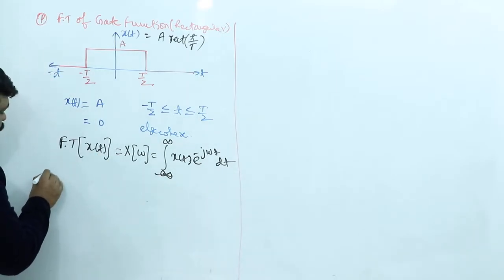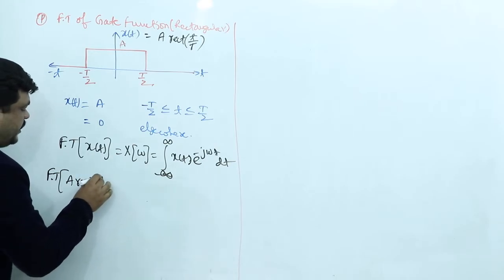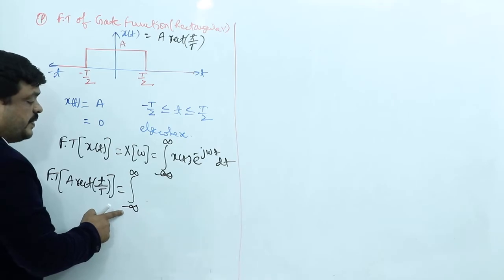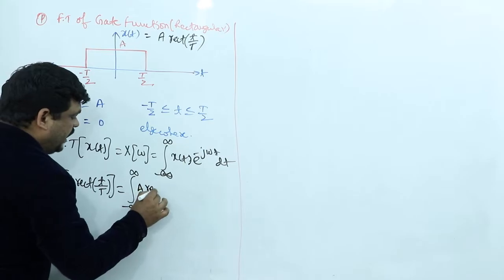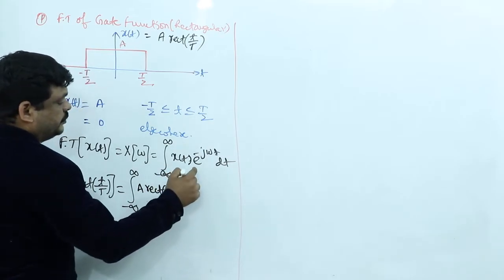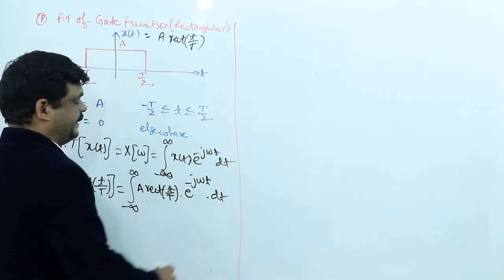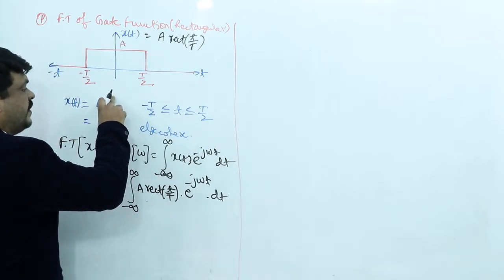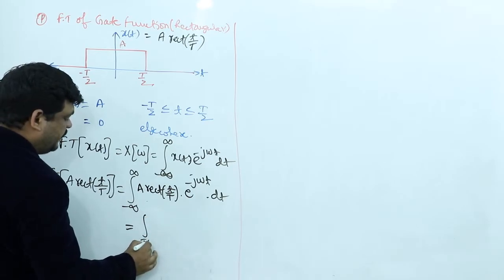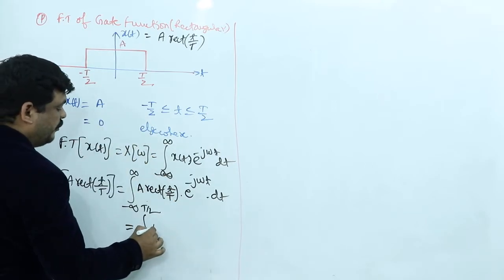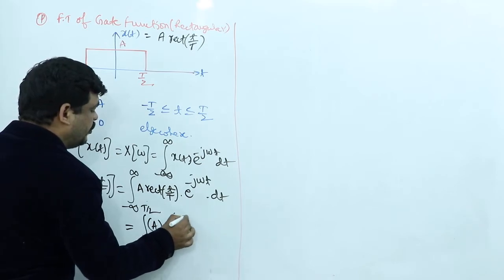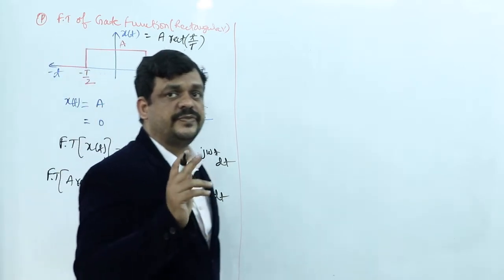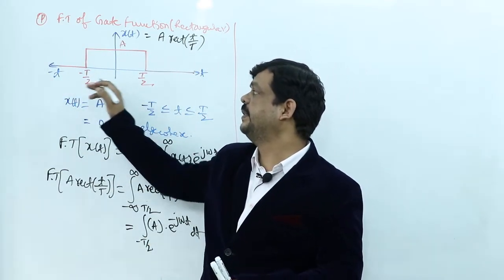So the Fourier transform of A · rect(t/T) is the integral from minus infinity to plus infinity of A · rect(t/T) · e^(−jωt) dt. Since the rectangular function is defined only from −T/2 to +T/2 and is zero elsewhere, we change the limits to −T/2 to +T/2 with amplitude A, giving: X(ω) = integral from −T/2 to +T/2 of A · e^(−jωt) dt.